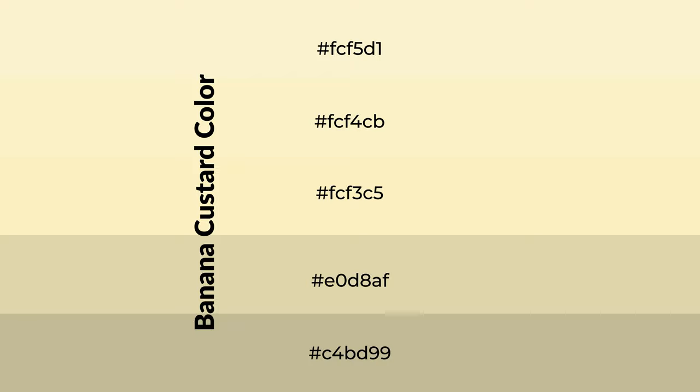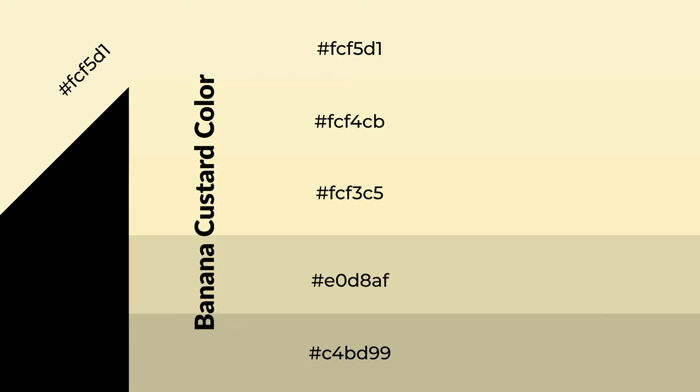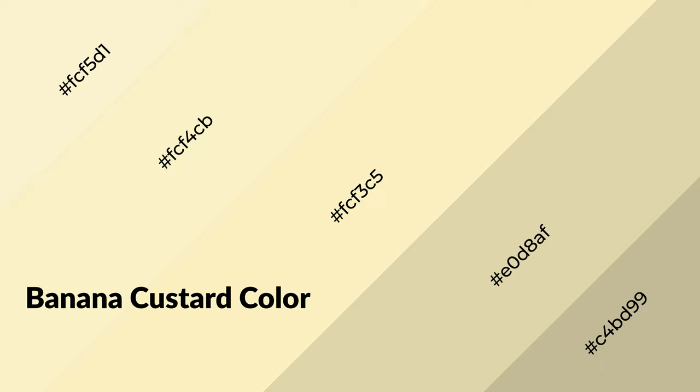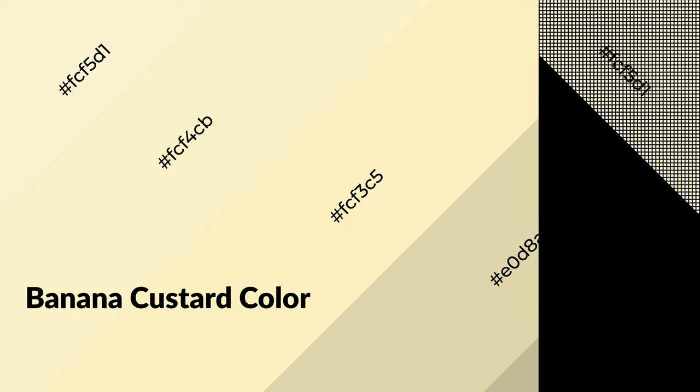To generate shades of a color, we add black to the color, and it is used in patterns, 3D effects, and layers. Shades create depth and drama. Banana custard is a warm color and it emits cozier and active emotions.